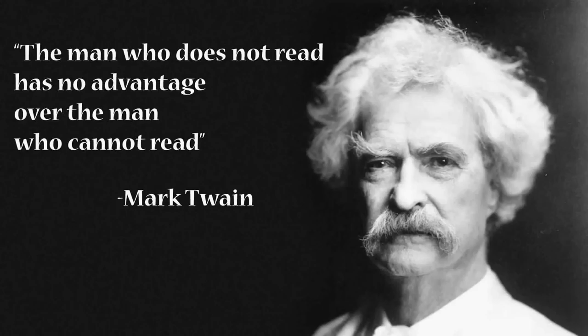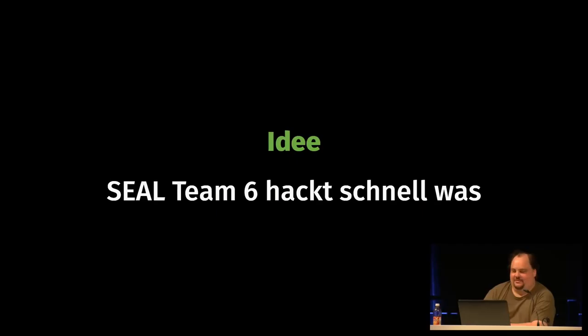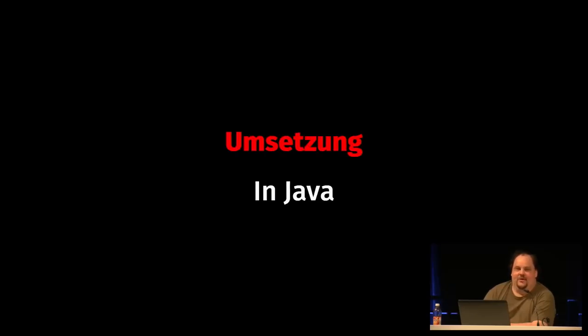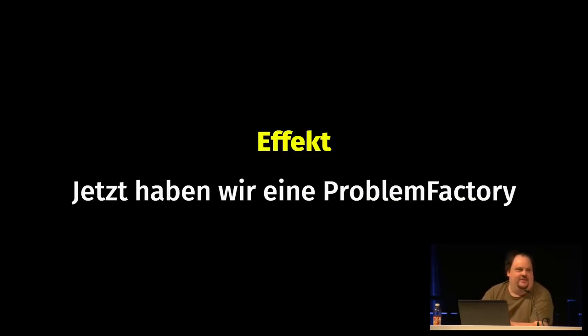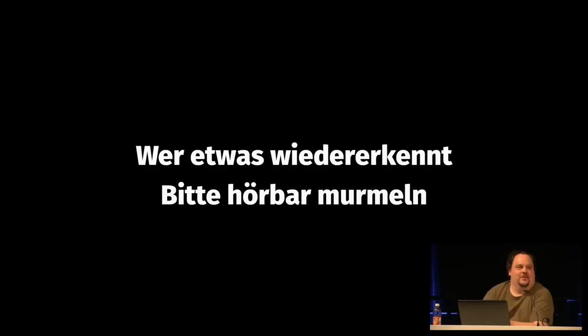The structure of this talk: we start with a problem, then say SEAL Team 6 is on the job — think of a team of special experts. Then it comes to implementation, which is usually when things go wrong, and we get an effect. Hopefully we have a realization. Problem became problem factory — that's an allusion to Java. We also have an interactive component inspired by British Parliament: if you recognize one of these patterns, please go ahead and murmur along.